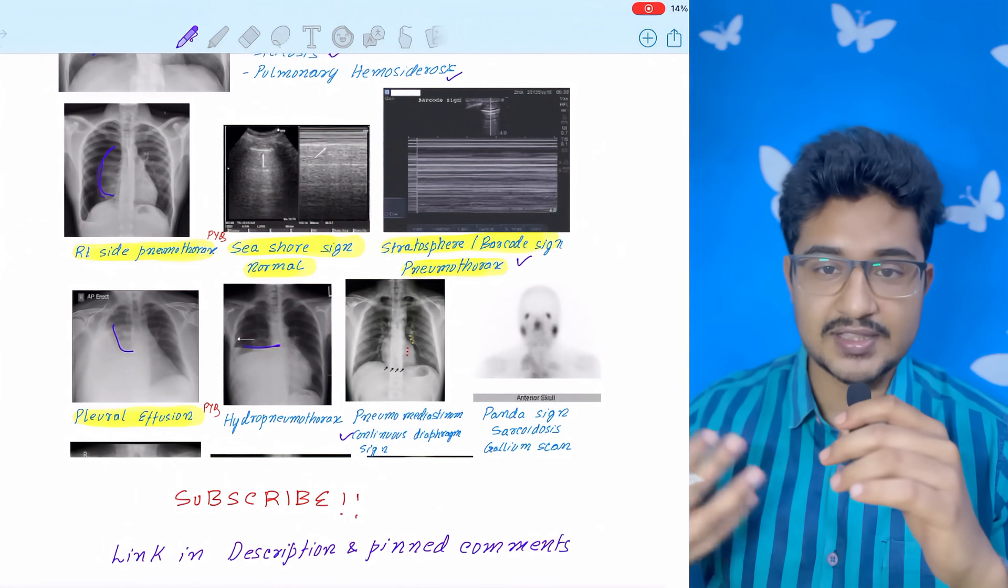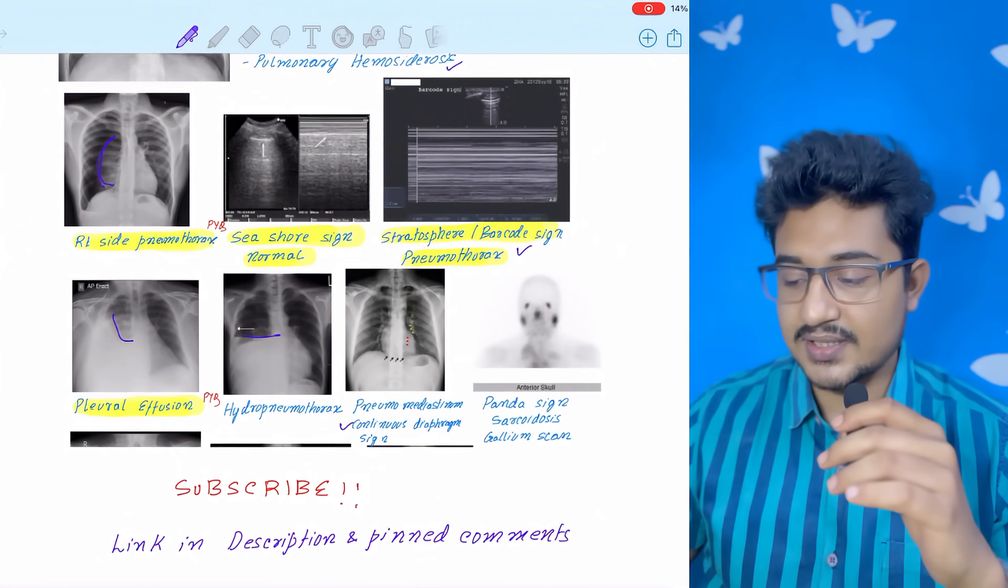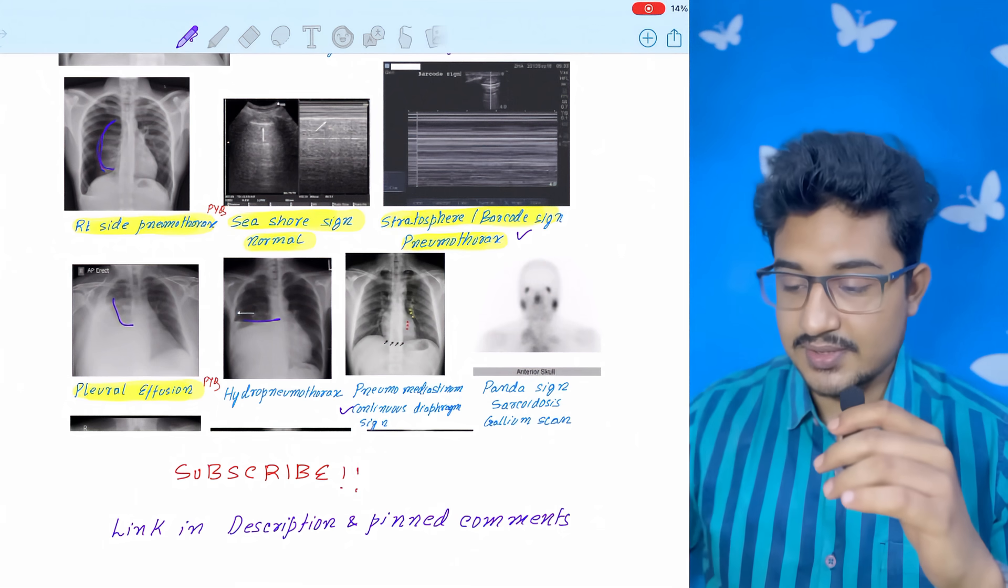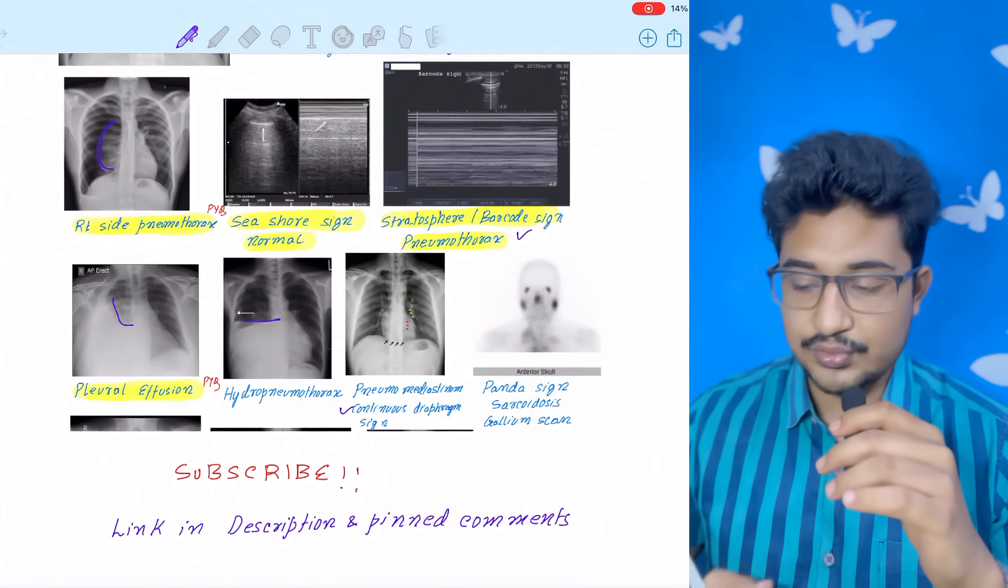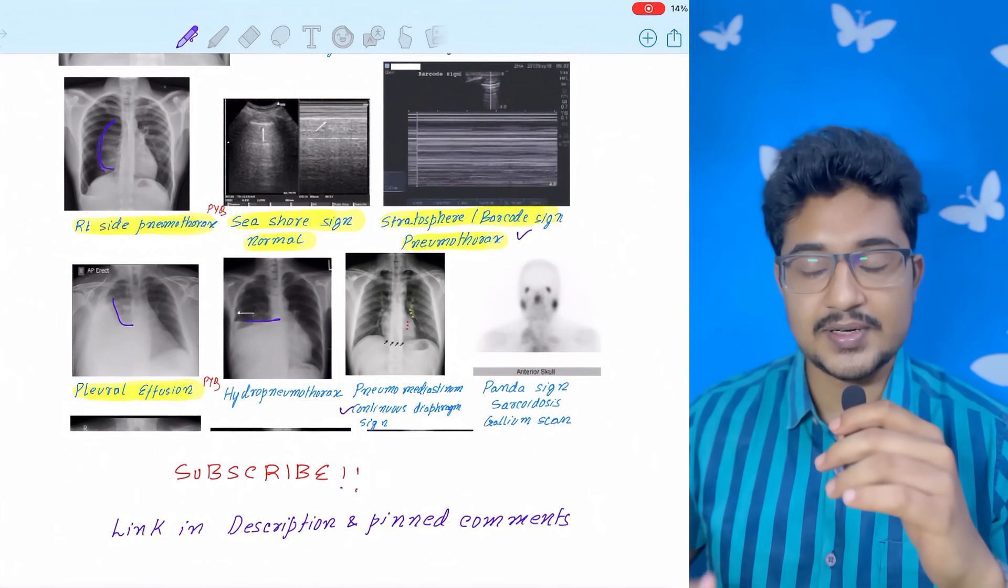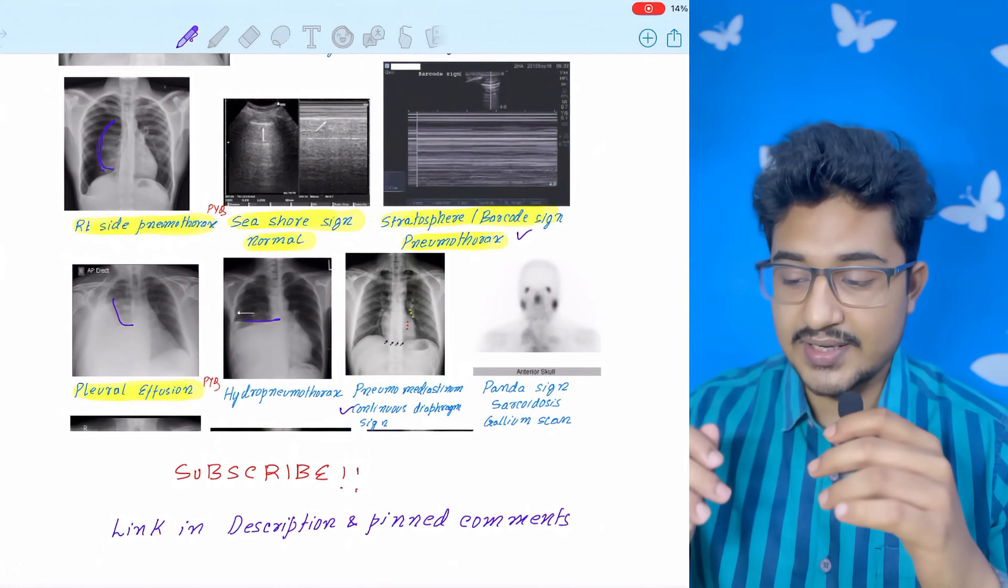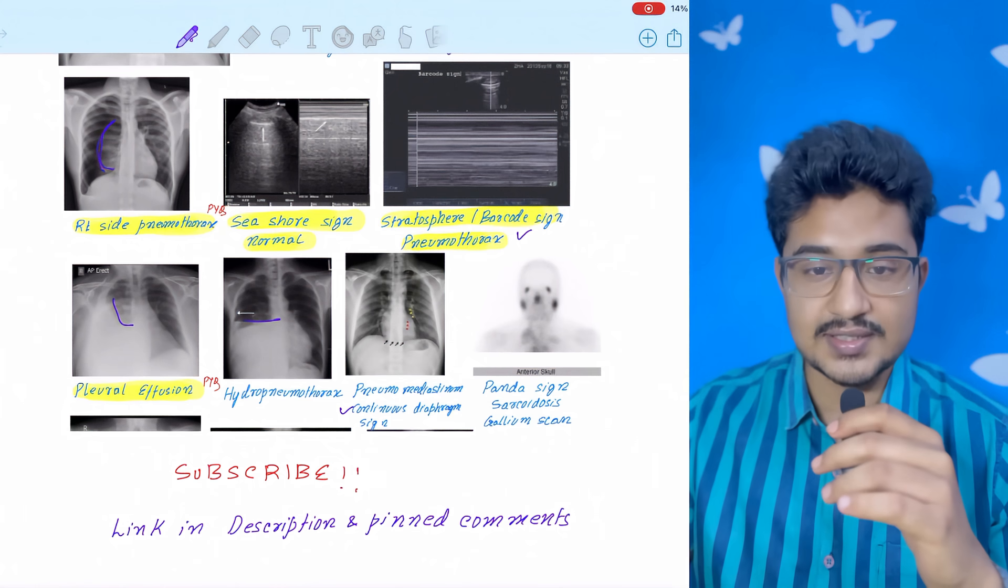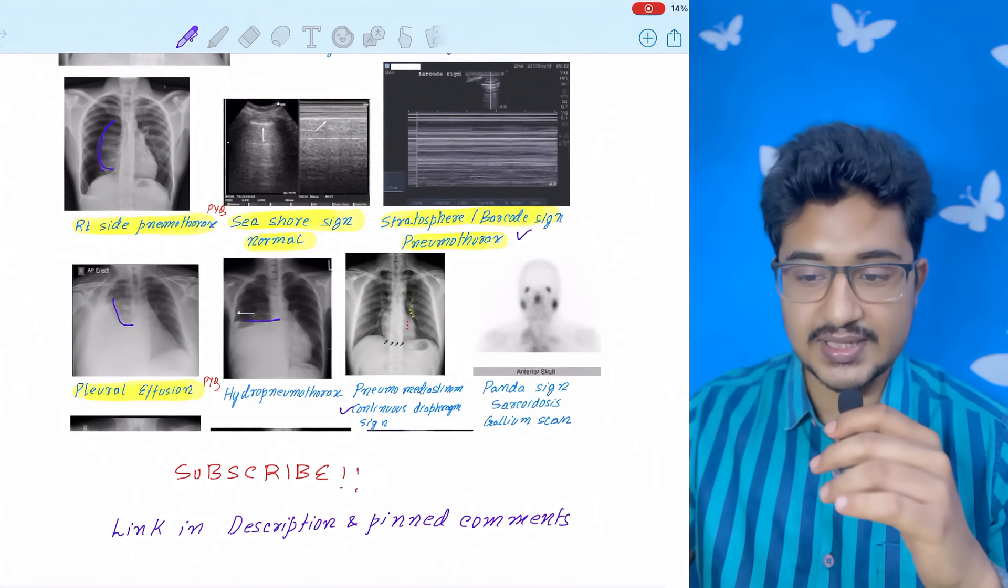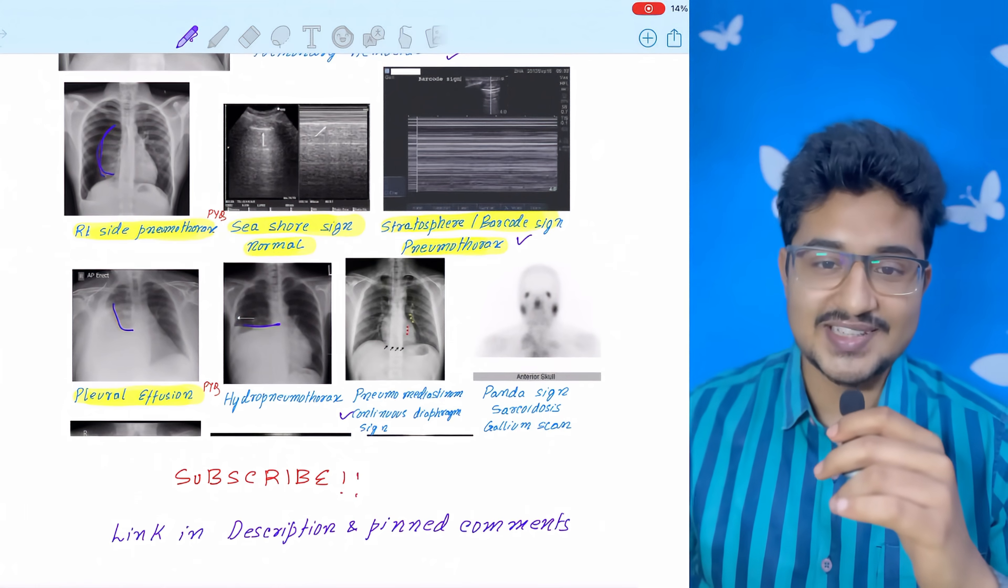So if you got any concepts correct, maybe the pemphigus one and pemphigoid, I did one MCQ discussion video where I talked about how to differentiate between ulcers. The venous ulcer also came in NEET PG. So this is it for today. All the best for your NEET PG exam.